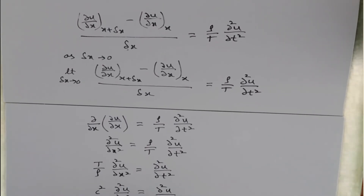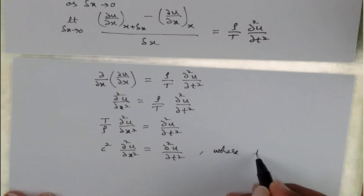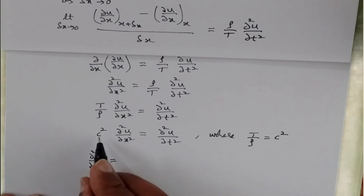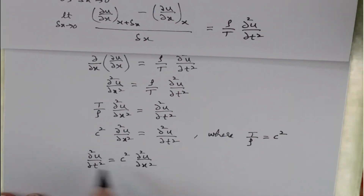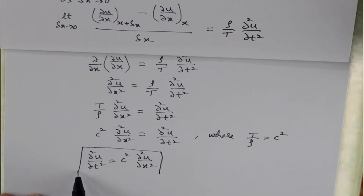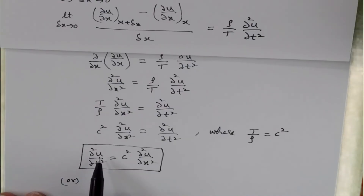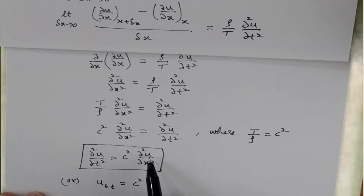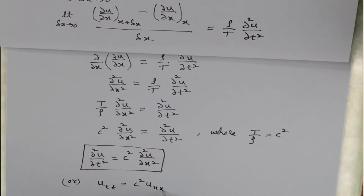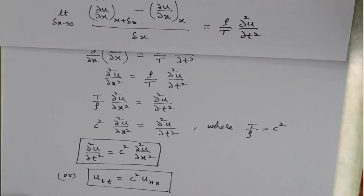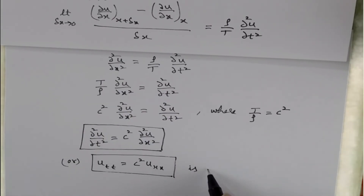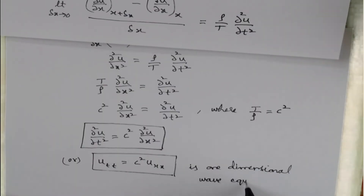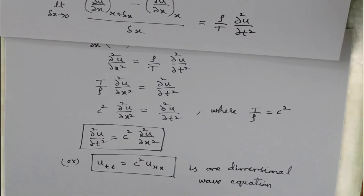Cross-multiplying, we get T/ρ · ∂²u/∂x² = ∂²u/∂t². Replacing T/ρ with the constant c², this becomes ∂²u/∂t² = c²·∂²u/∂x², or equivalently u_tt = c²·u_xx. This is the one-dimensional wave equation. Thank you.